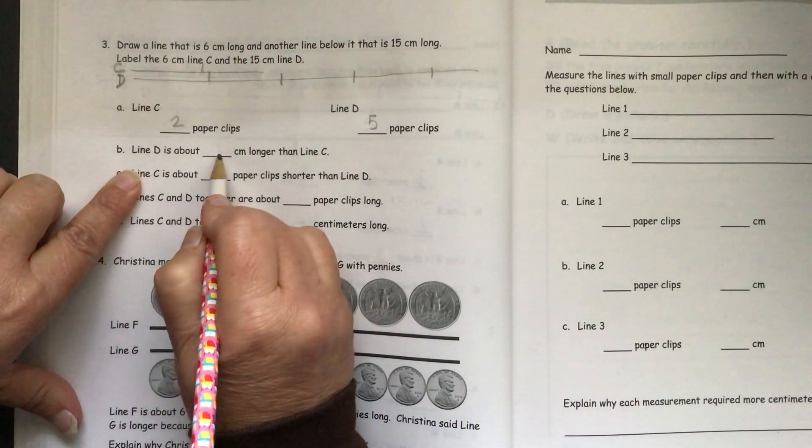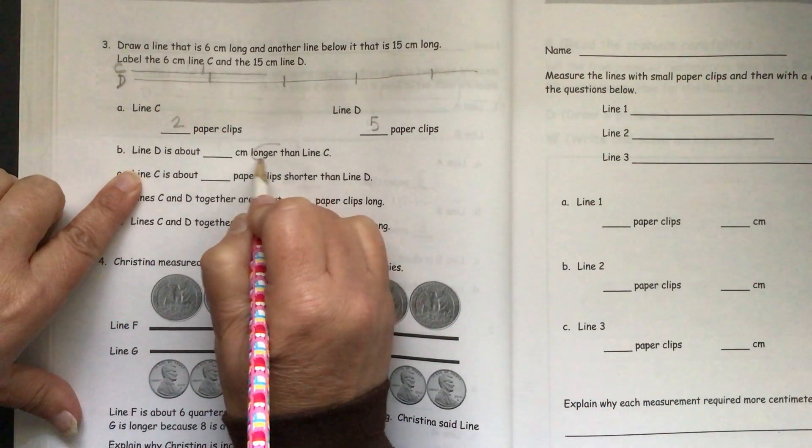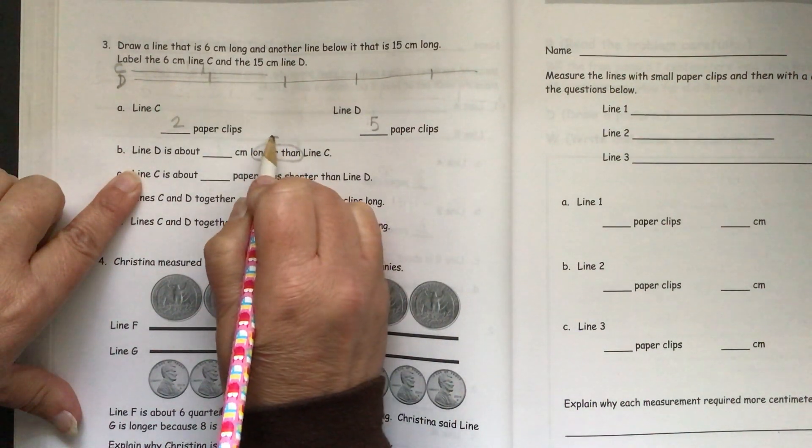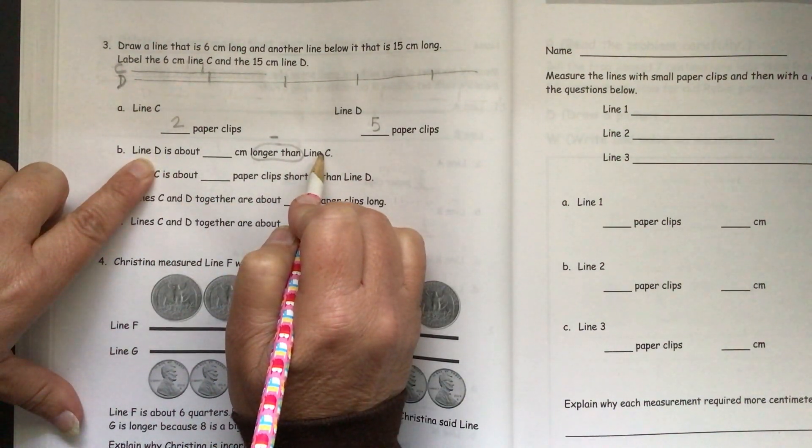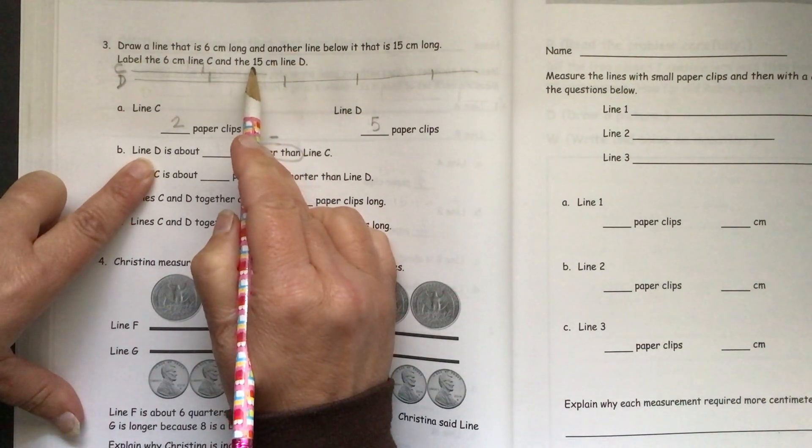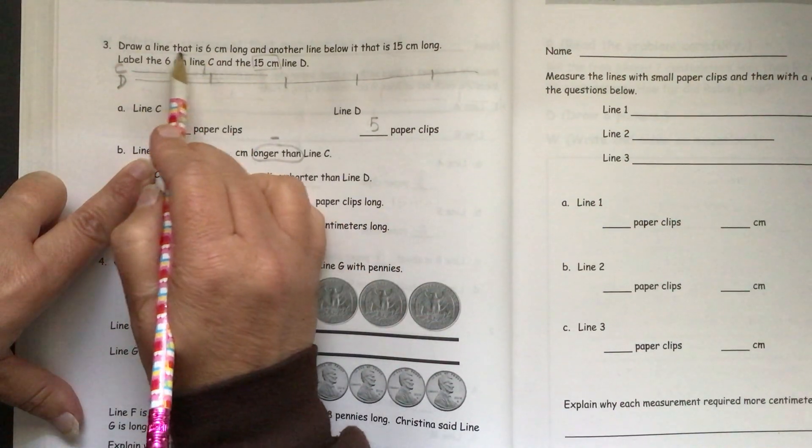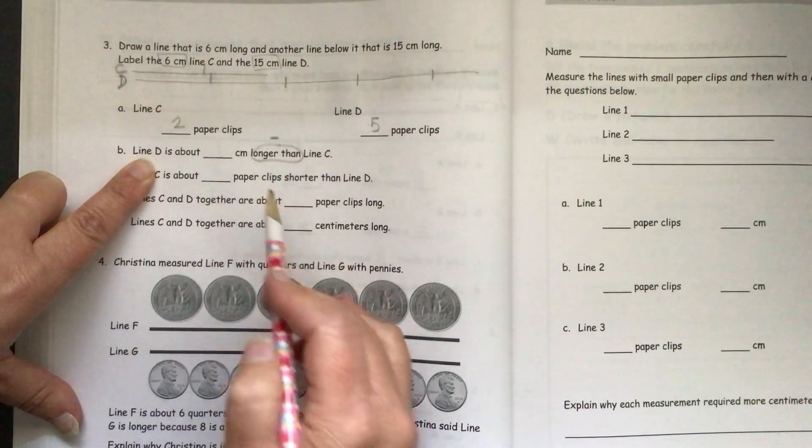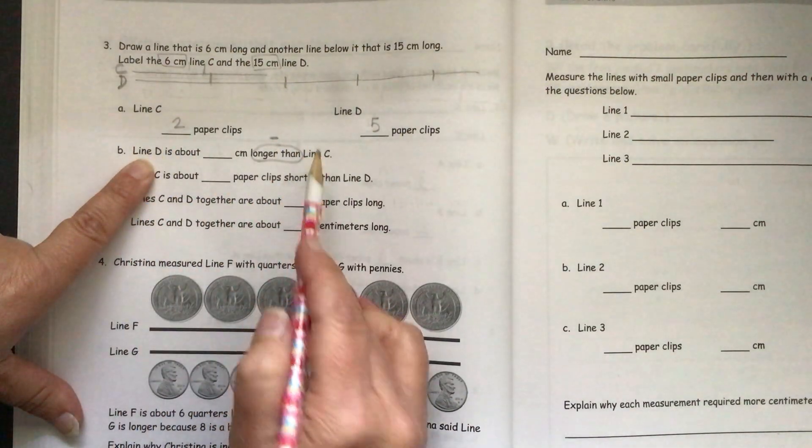Line D is about blank centimeters longer than line C. So we're comparing these longer than. That means we'll have to subtract line D and line C. And remember, they told us the centimeters. So D is 15 centimeters long and C is 6 centimeters long. So you'll have to subtract 15 minus 6.